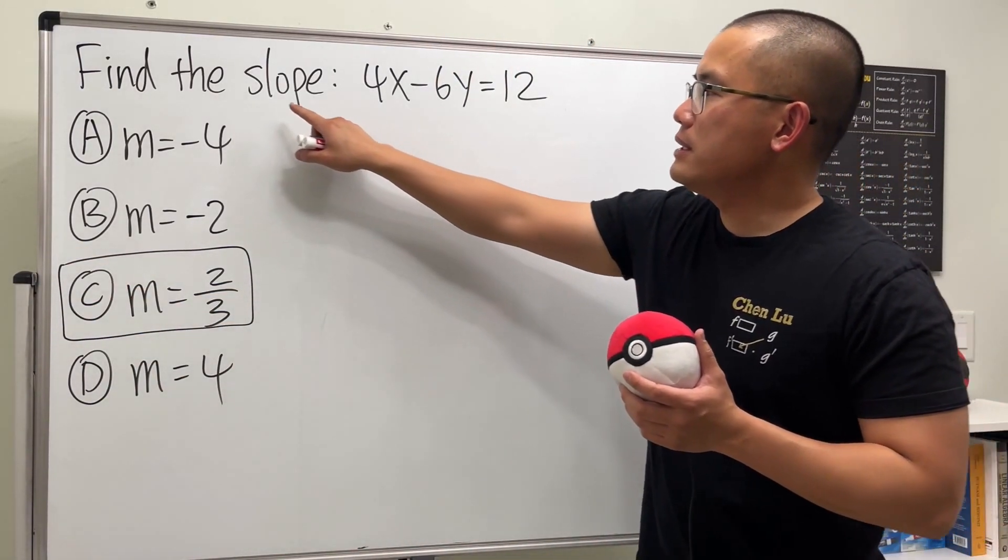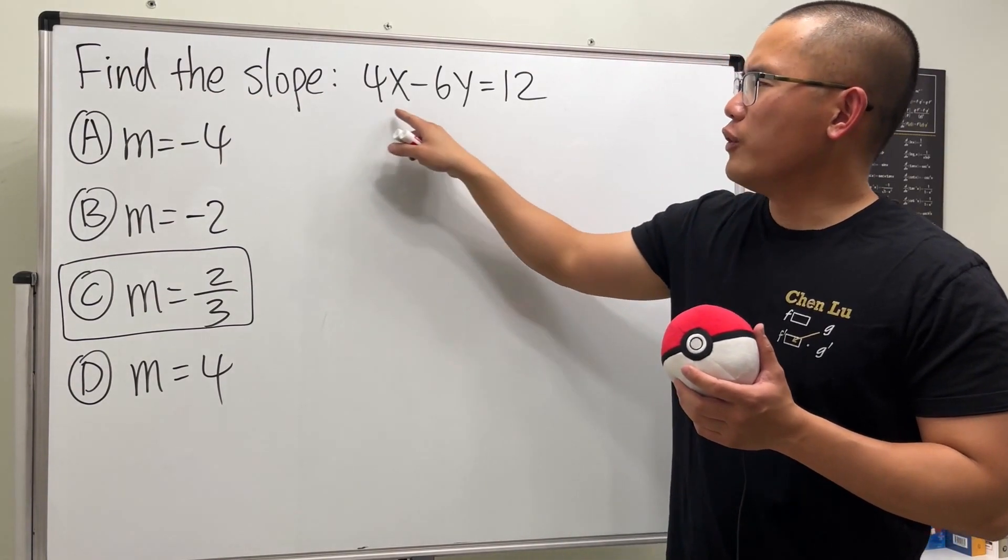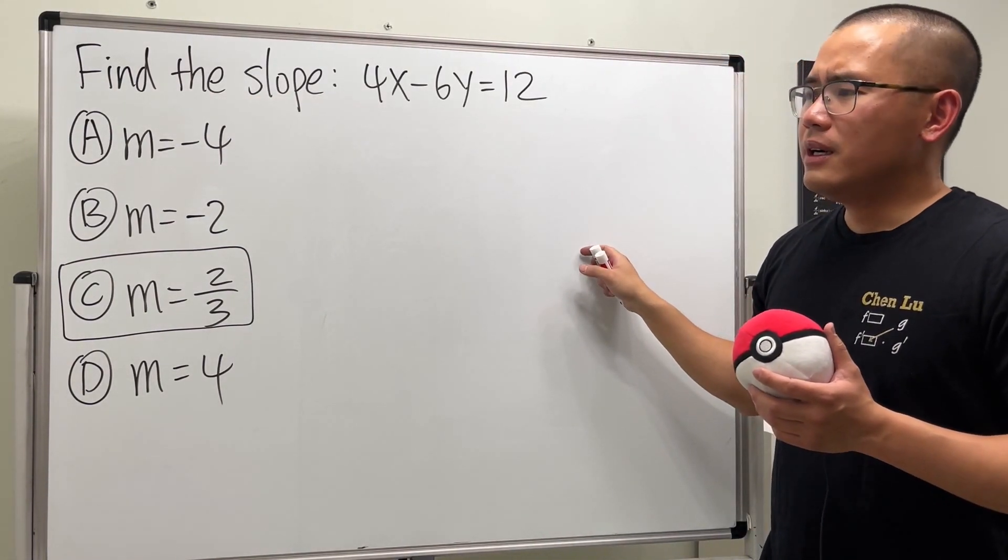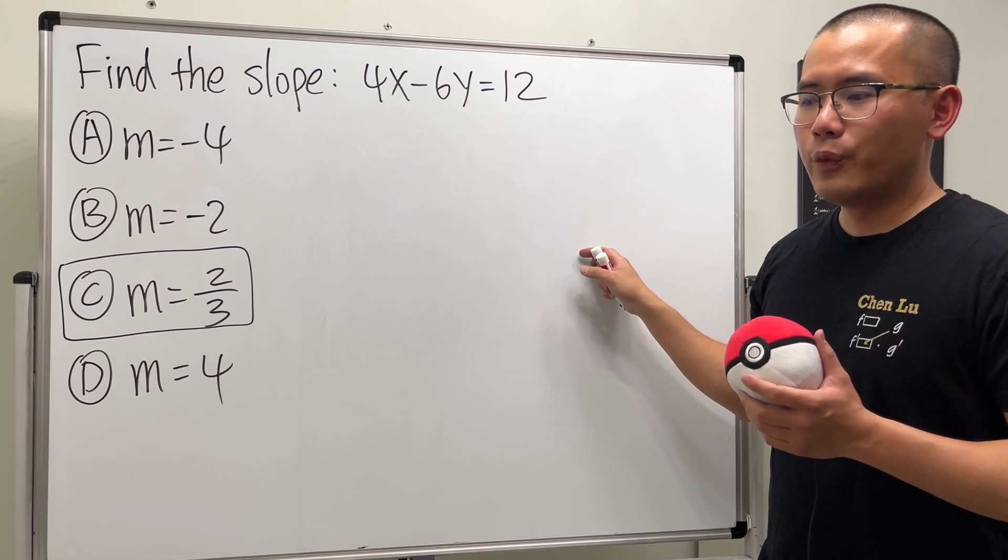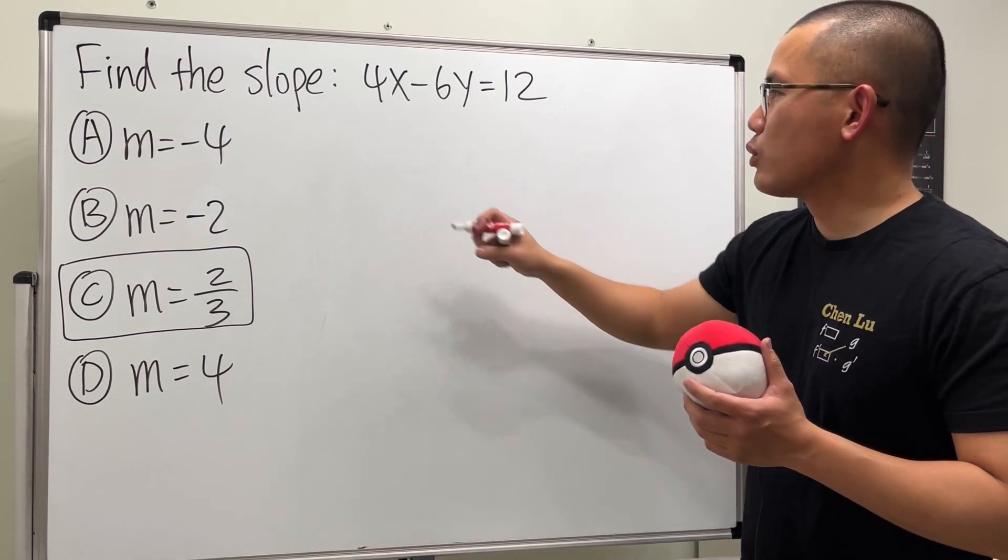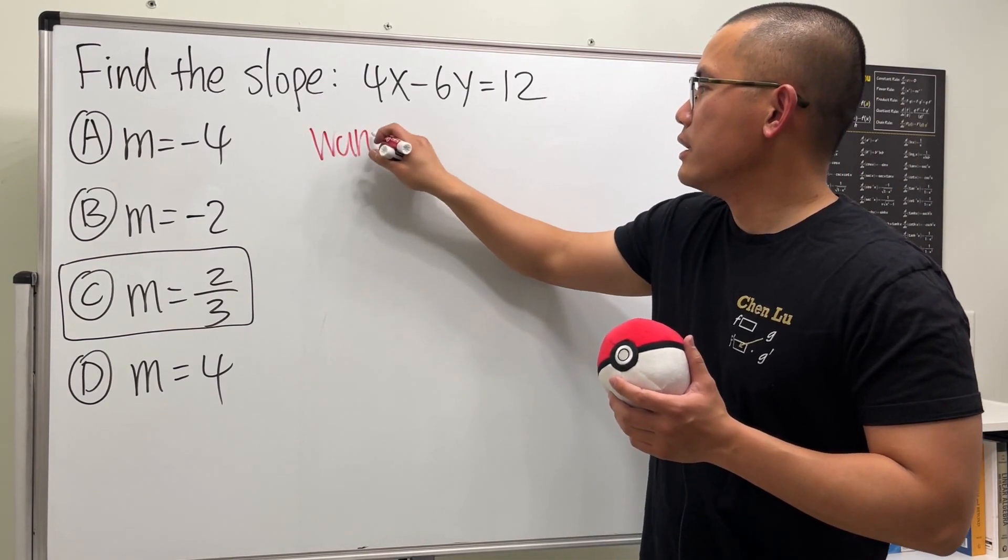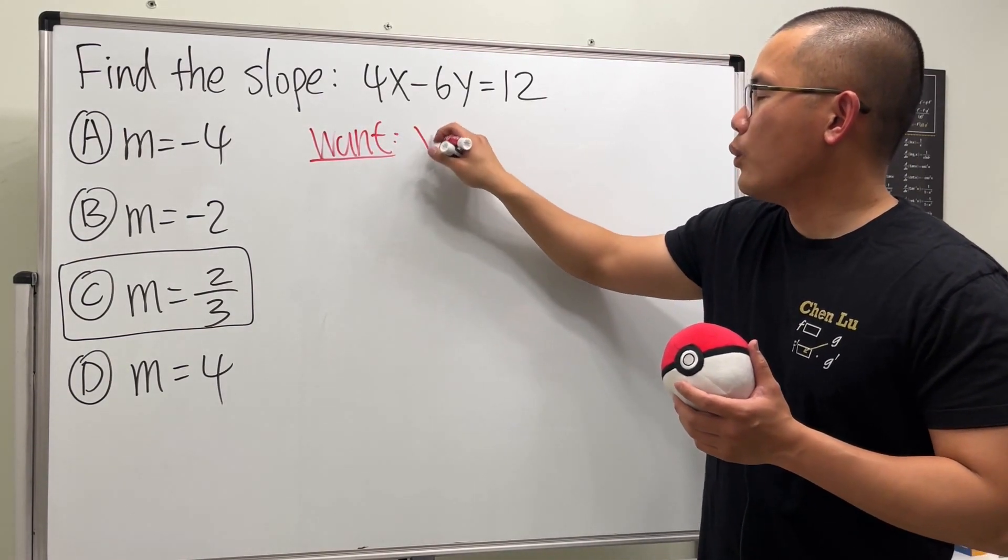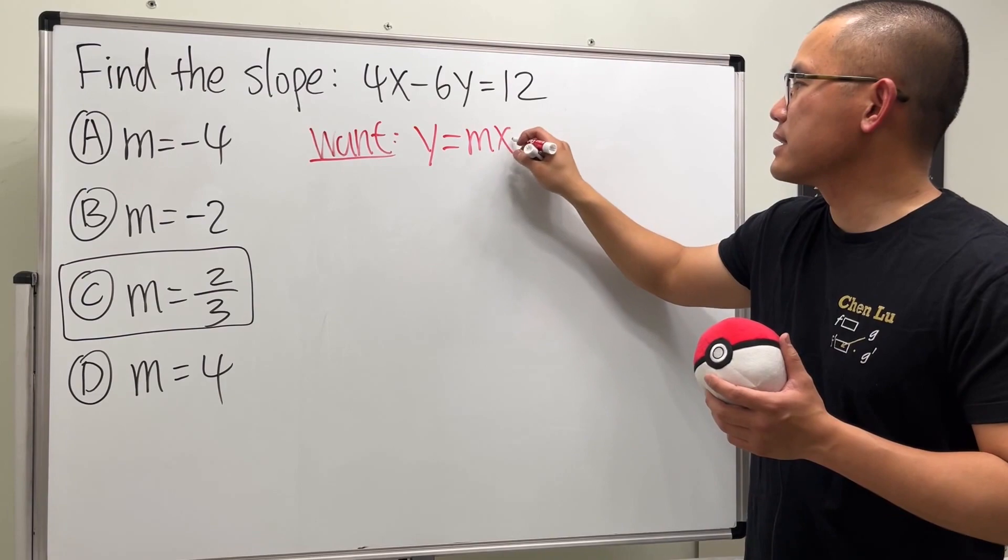Firstly, to get a slope for the standard form is not ideal. We like to have the equation in the slope intercept form. So this is what we want: we want the equation in the form of y equals mx plus b.